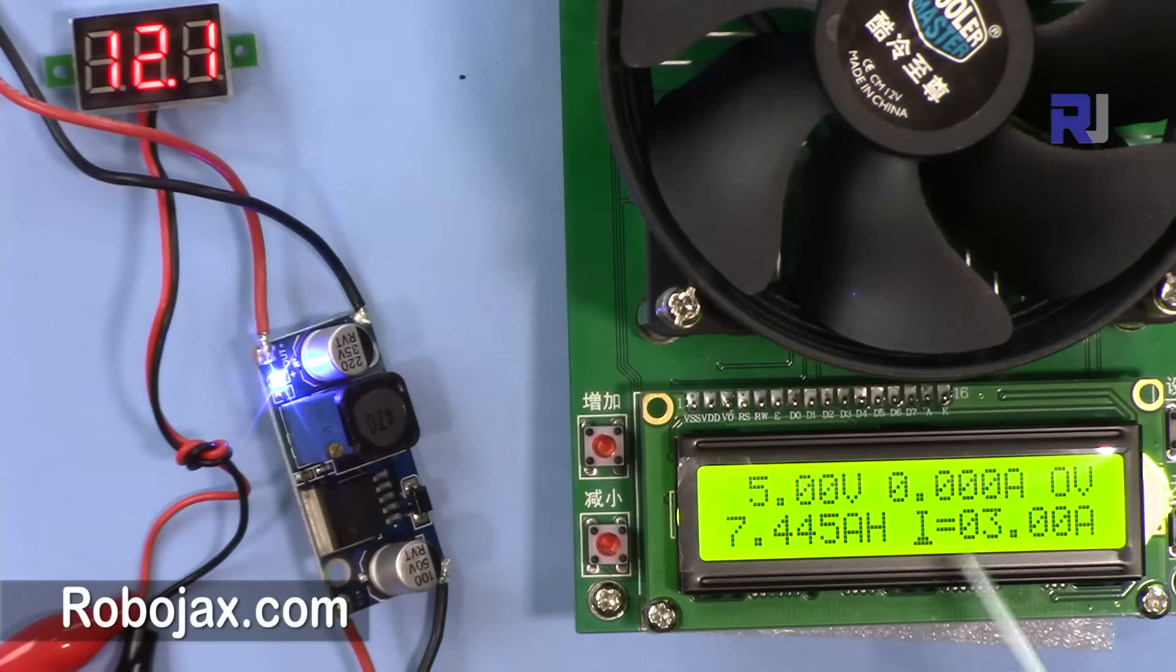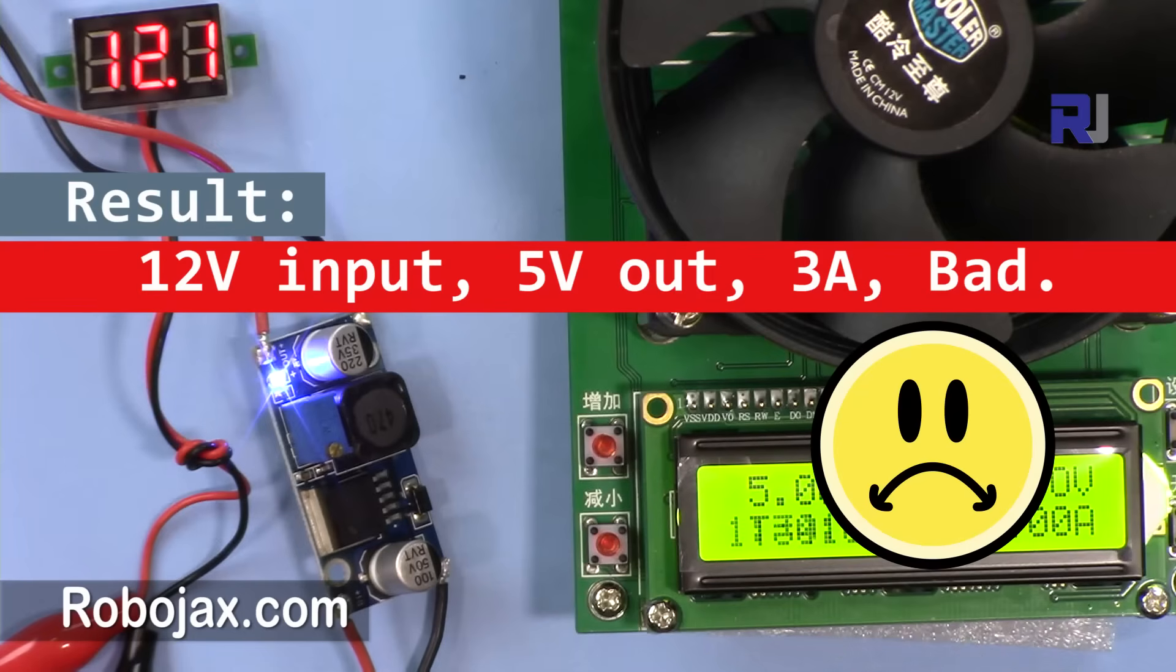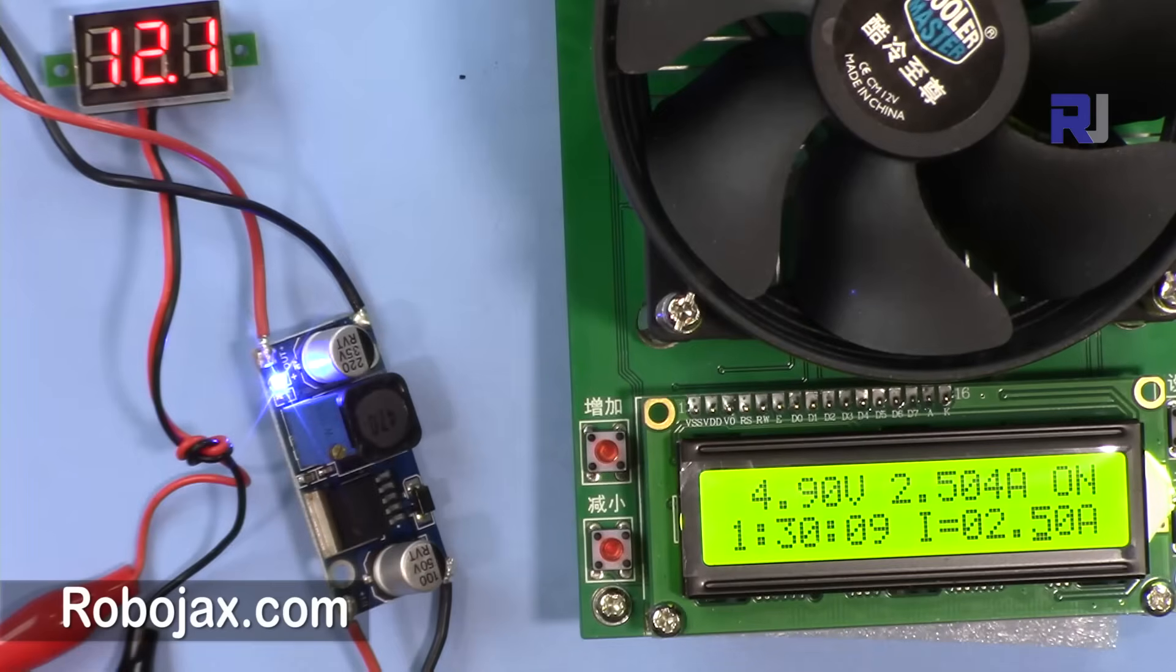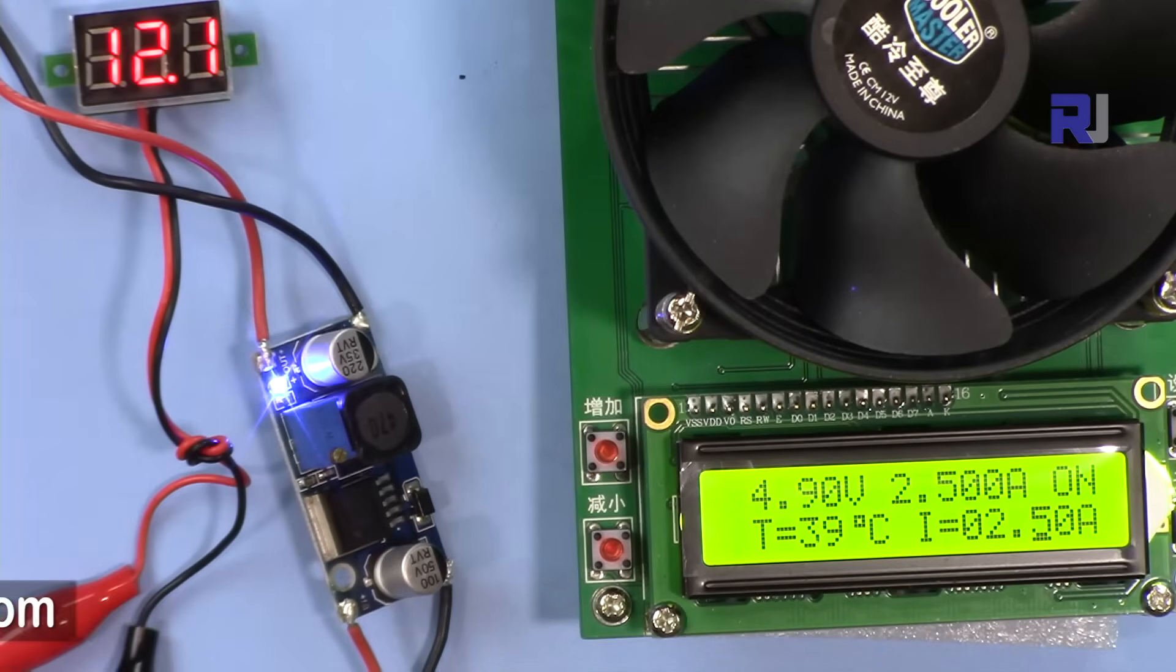So 4.9 volts, so it will shut off now. Okay, so 3 amp doesn't work. 12 volts input, 5 output, 2.5 amp, let's see. By the way, it was already hot so we just continue with the test.